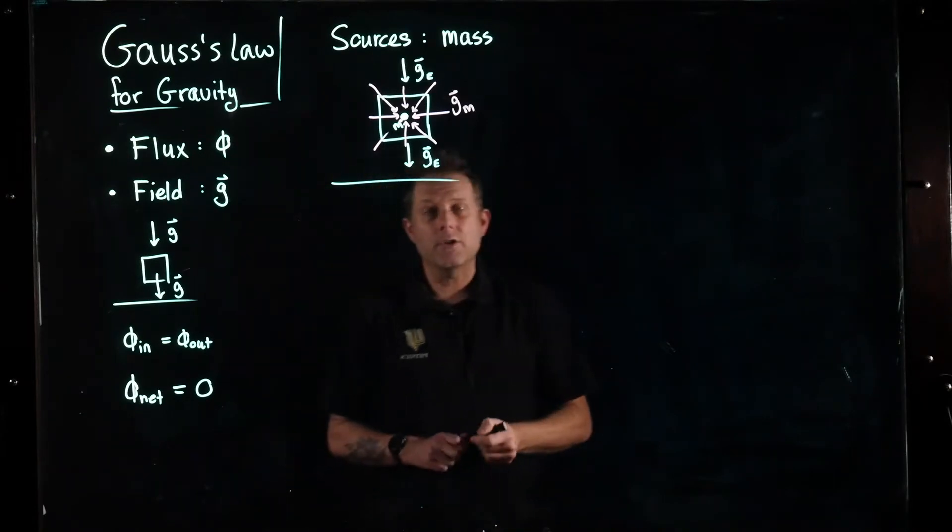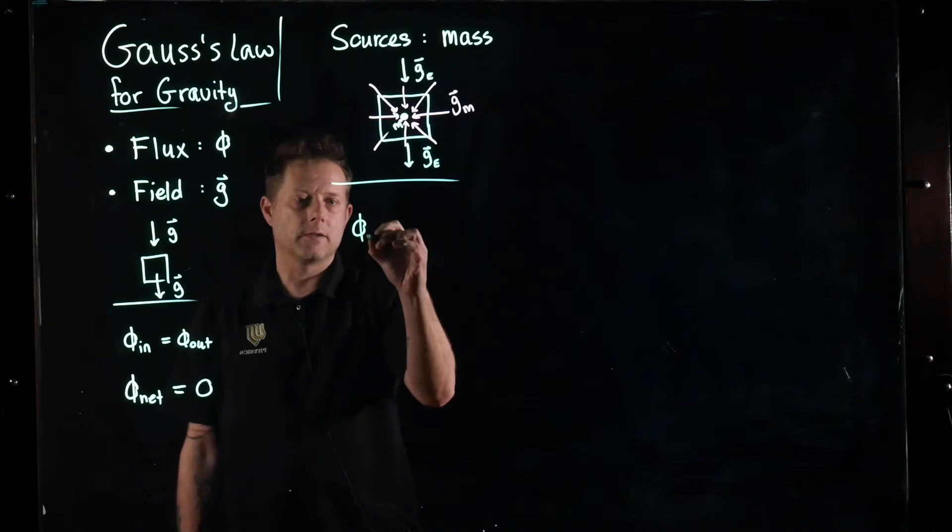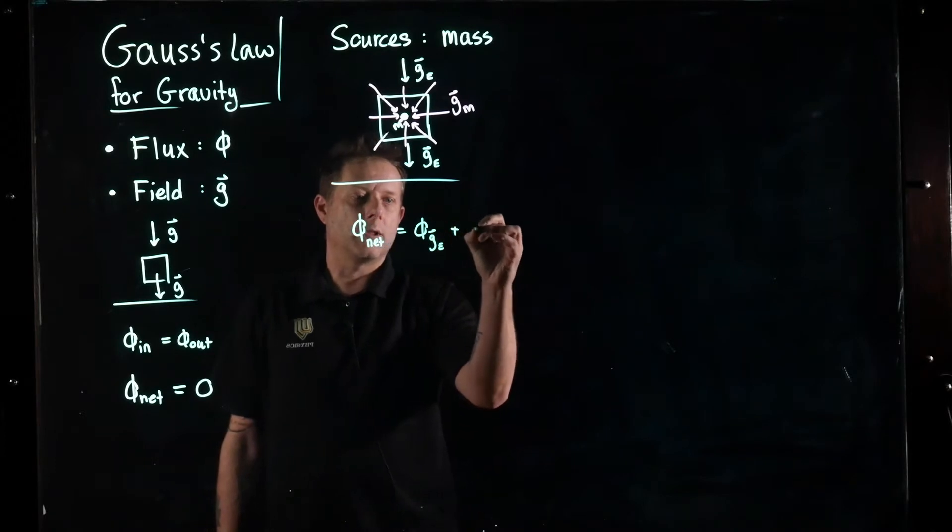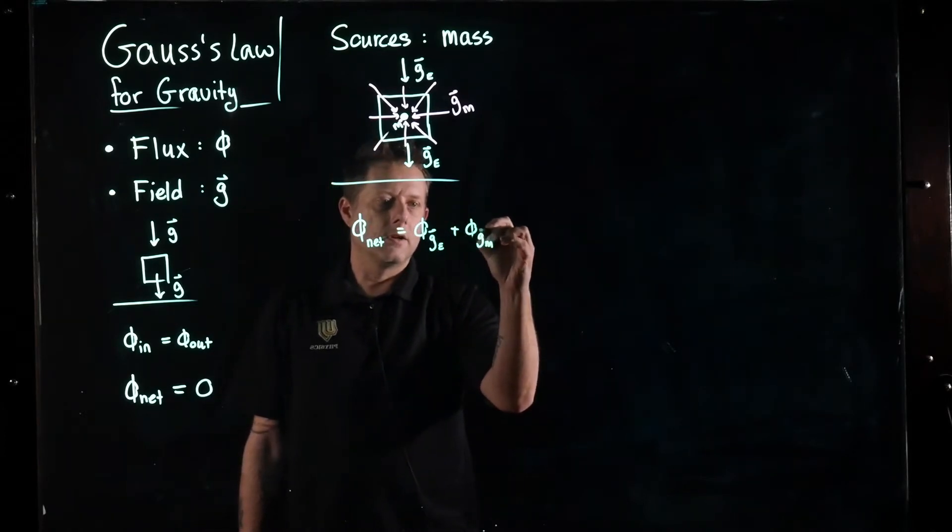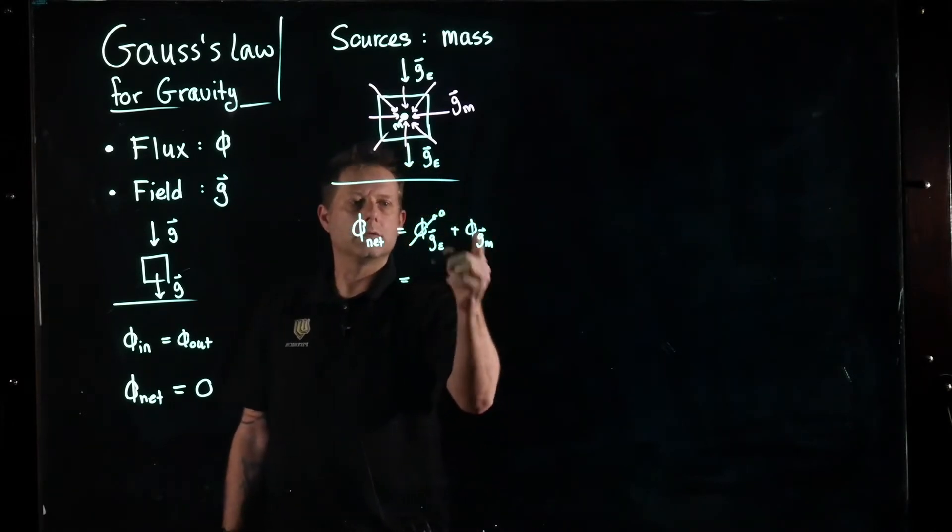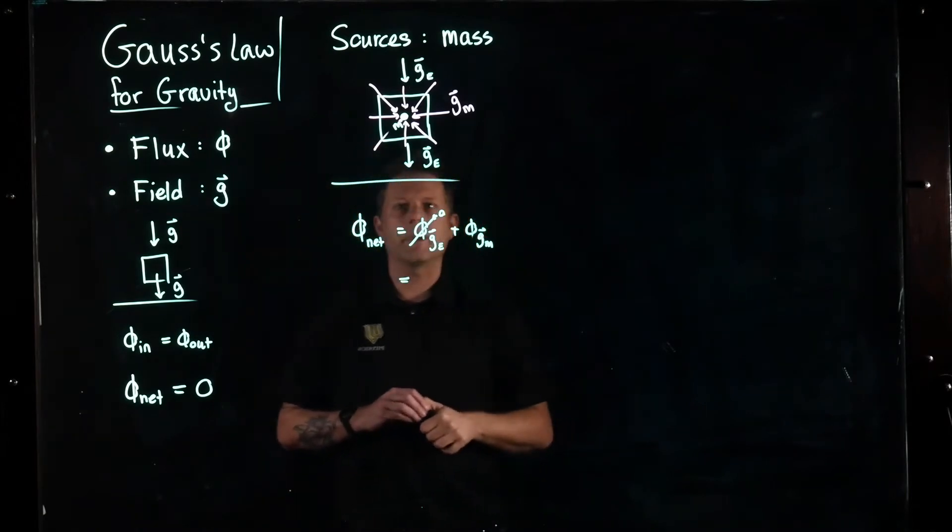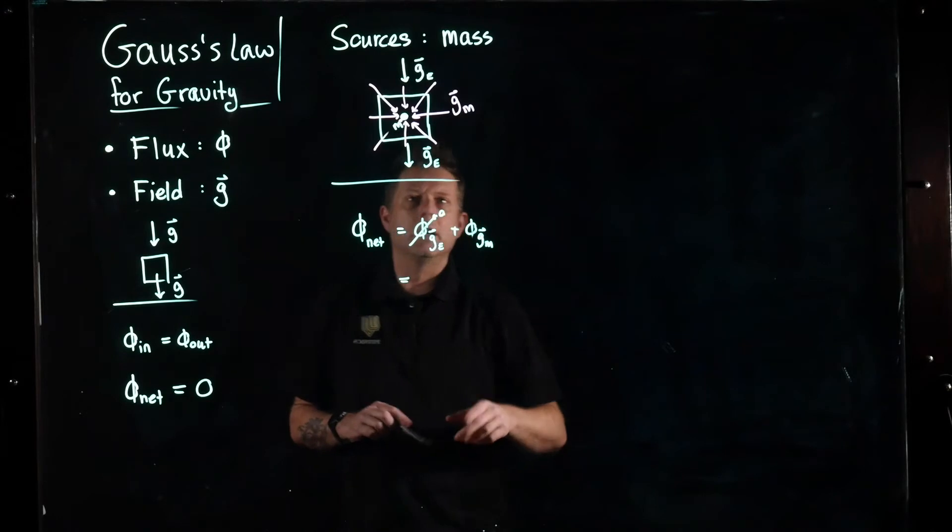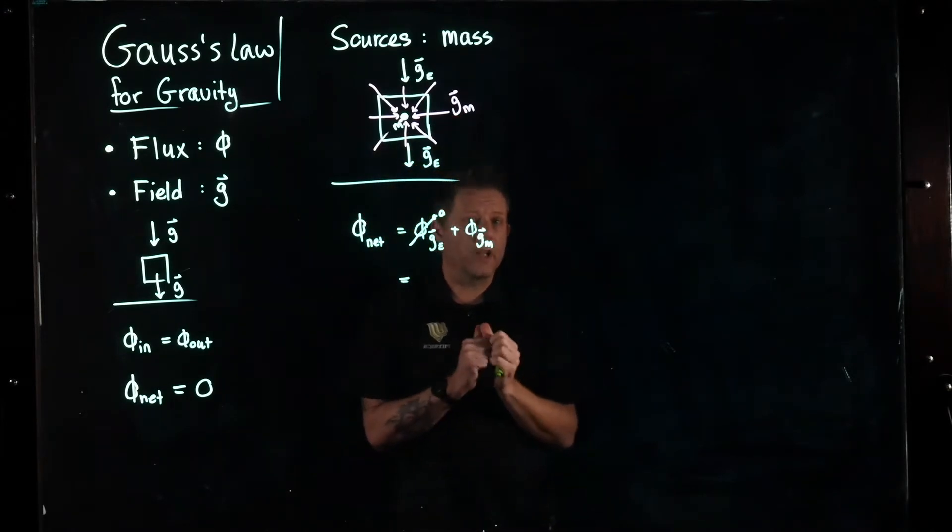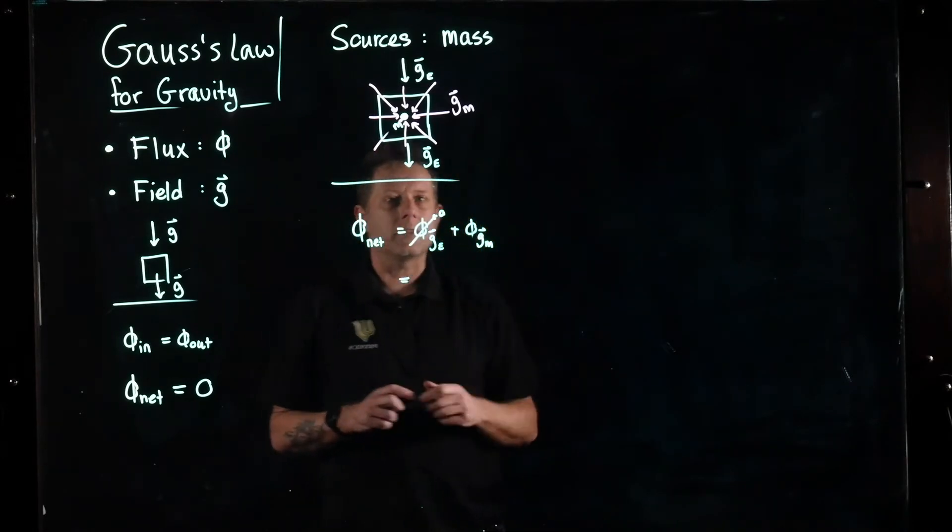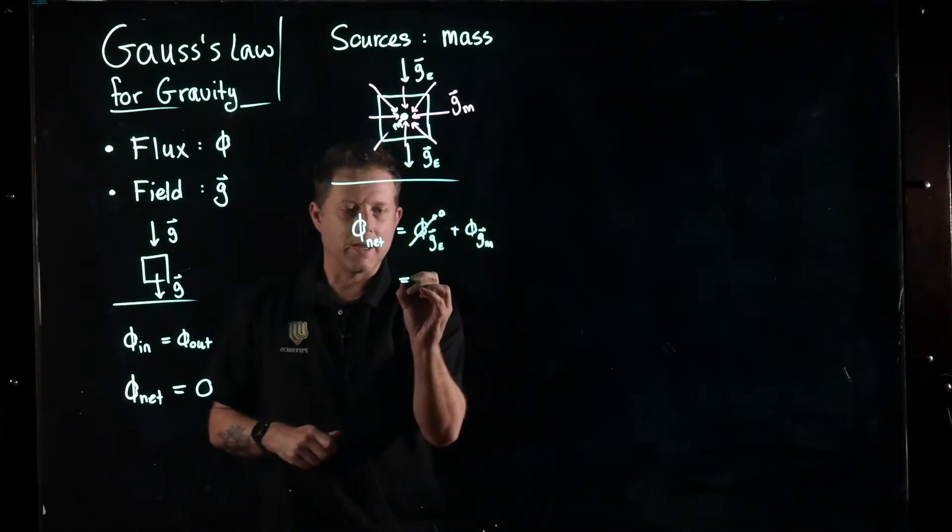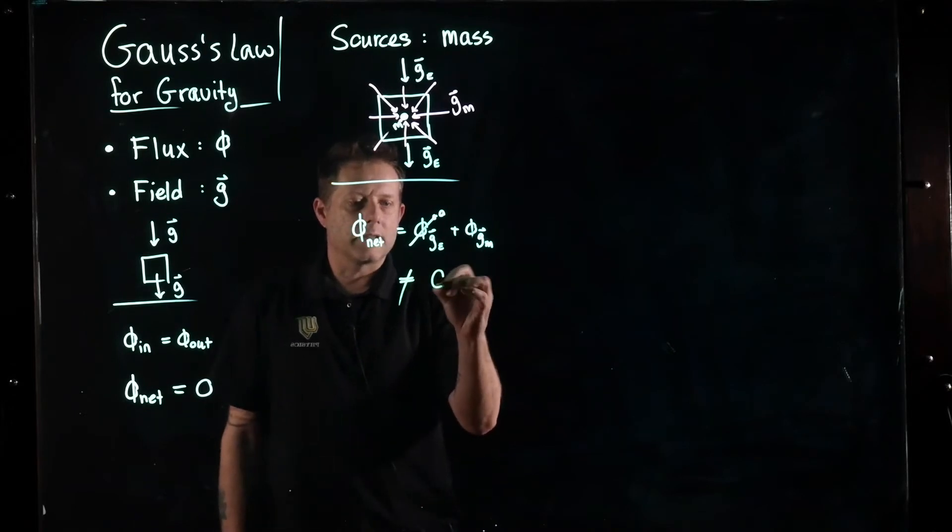So we now look at what is the total flux. It's going to be the flux due to the gravitational field due to the earth plus the flux due to the gravitational field of the mass. Now we already argued this one is zero, but what about this one? Well we can see that no matter where we are on this box, this flux is going into the box. None of it is flowing out. That meant that this part is always going to be not zero.